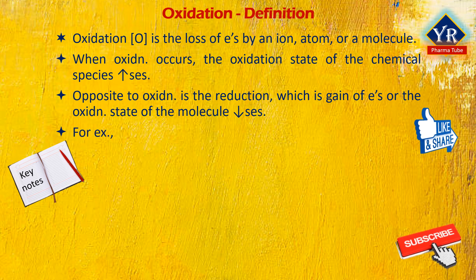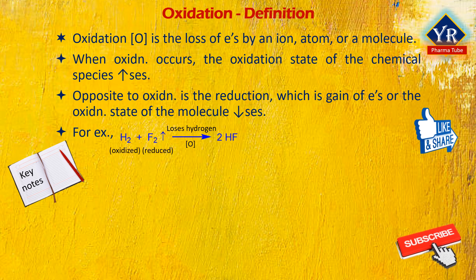For example, a reaction between hydrogen and fluorine gas forms hydrofluoric acid. In this reaction, hydrogen is being oxidized and fluorine is being reduced. This spontaneous reaction releases 542 kilojoules per 2 grams of hydrogen because the hydrogen-fluorine bond is much stronger than the fluorine-fluorine bond.